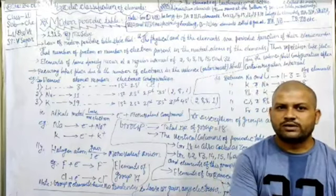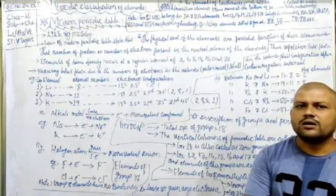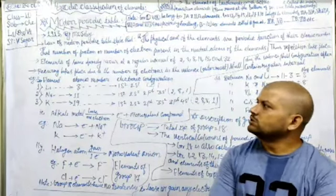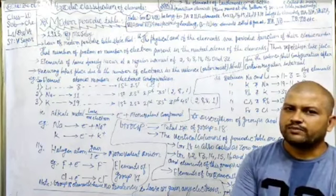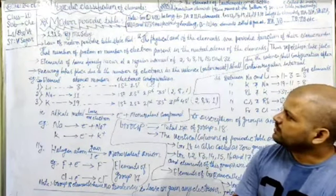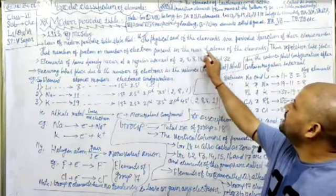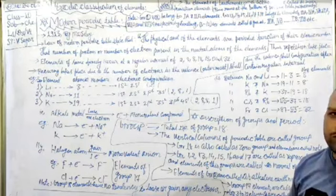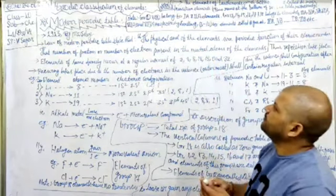After great vital activities, one decision came in 1913 by Moseley. He explained that the fundamental properties of elements depend upon valence shells. So the modern periodic table is based on the configurations of valence shells. Keeping this in mind, he explained that the number of protons or electrons present in neutral atoms determines the physical and chemical properties of elements. This makes a law called the law of the modern periodic table.